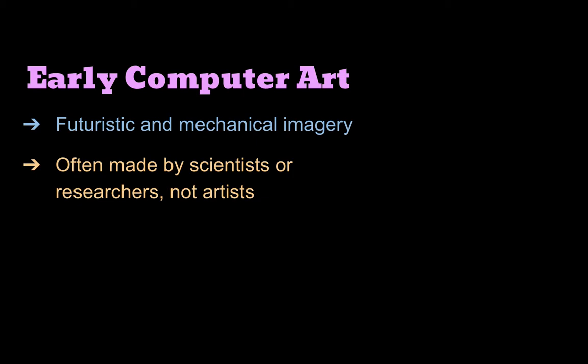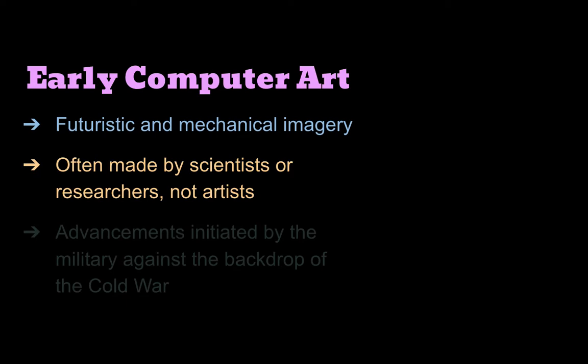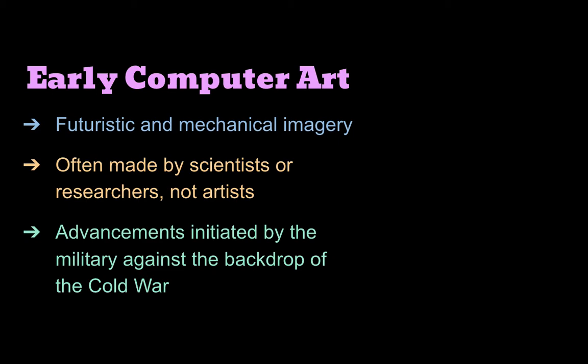Let's first look at a few examples of early computer art. The earliest examples start in the late 1950s, early 1960s. You'll notice right away that many of these works have a very futuristic and mechanical type of imagery. That's because many of the earliest examples were made by people who were scientists, though some of them thought of themselves as artists as well. This is all happening against the backdrop of the Cold War, roughly from 1947 until 1991.